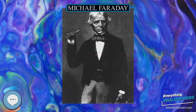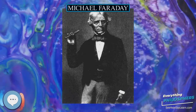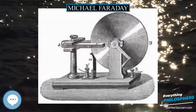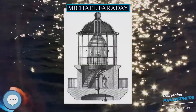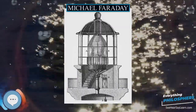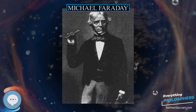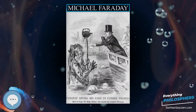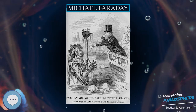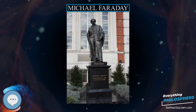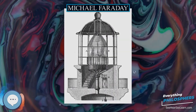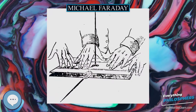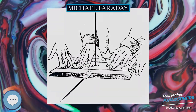In 1820 Faraday reported the first synthesis of compounds made from carbon and chlorine — C₂Cl₆ and C₂Cl₄ — and published his results the following year. Faraday also determined the composition of the chlorine clathrate hydrate, which had been discovered by Humphry Davy in 1810. Faraday is also responsible for discovering the laws of electrolysis, and for popularizing terminology such as anode, cathode, electrode, and ion, terms proposed in large part by William Whewell. Faraday was the first to report what later came to be called metallic nanoparticles. In 1847 he discovered that the optical properties of gold colloids differed from those of the corresponding bulk metal, probably the first reported observation of the effects of quantum size, and might be considered to be the birth of nanoscience.